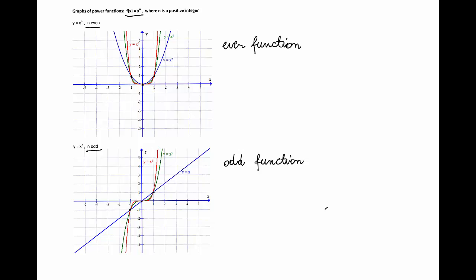When x is greater than 1, a larger power of x results in a larger value. Therefore the graph of x⁴ is above the graph of x², and the graph of x⁶ is above the graph of x⁴. The same behavior can be noticed for n odd when x is positive.